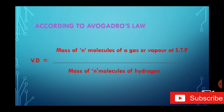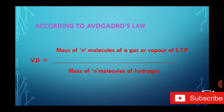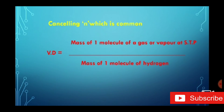According to Avogadro's law, equal volumes of all gases contain equal number of molecules. Let us consider one volume of gas containing n number of molecules. Then the vapour density equals the mass of n molecules of gas or vapour divided by the mass of n molecules of hydrogen. Cancelling n, which is common, we get: vapour density equals the mass of 1 molecule of gas or vapour divided by the mass of 1 molecule of hydrogen.